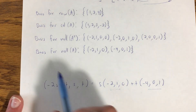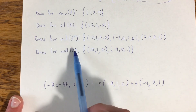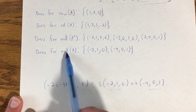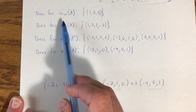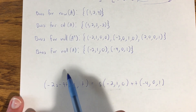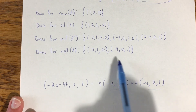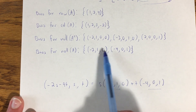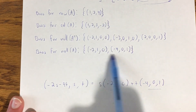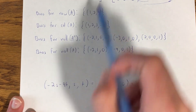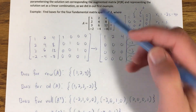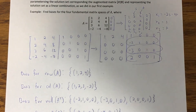And that checks out as well. The nullity of A — the dimension of the null space — plus the rank of A — the dimension of either the row or column space — should equal the number of columns in the original matrix A. This has a nullity of 2 and a rank of 1. Two plus one is three, and there are indeed three columns in the original matrix.